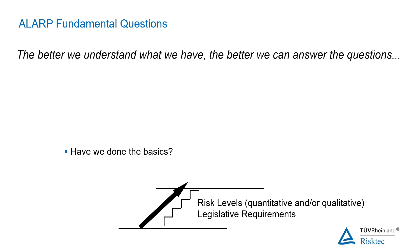It also follows that the risk must lie on a level, whether qualitatively or quantitatively assessed, that is at least regarded as tolerable. Different industries and organisations will define tolerable in different ways, but it may be, say, less than a one in a thousand chance of a fatality, or that the risk must lie outside of the high risk zone on a risk matrix.